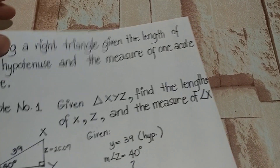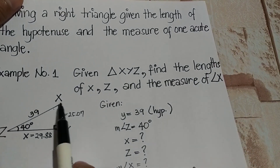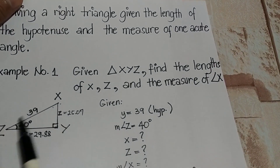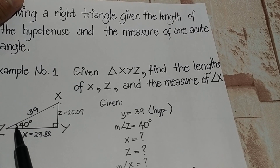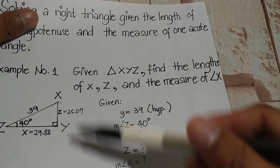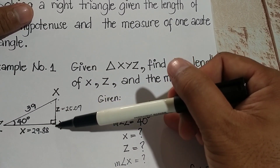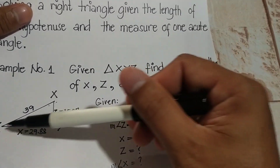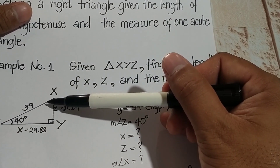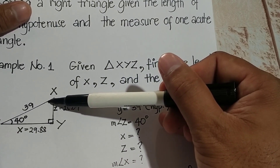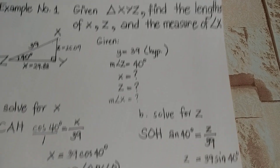Again, in our problem we have the given hypotenuse and one acute angle measuring 40 degrees. We were asked to find the unknown sides — side Z and side X — as well as the measure of angle X.